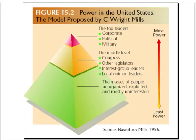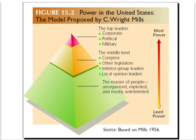Underneath the power elite, there's a middle level comprising members of the U.S. Congress — their equivalent of the Houses of Parliament — other legislatures, local government, state government, and the leaders of pressure groups and other local organisations. At the bottom, we've got the great mass of the population, who are relatively powerless because they're unorganised, exploited, and apathetic — mostly uninterested in politics — which makes it much easier for the cohesive group at the top to control them.